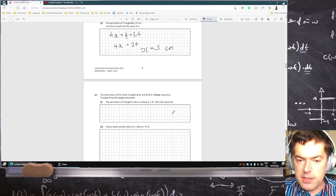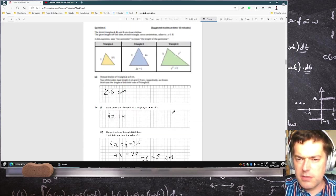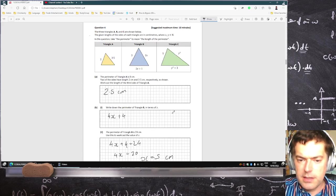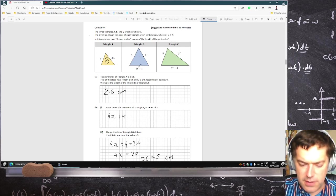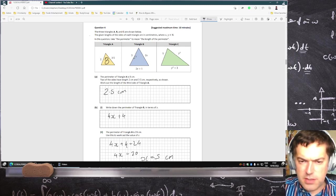And the perimeter of all three triangles form a linear sequence. Triangle C has the largest perimeter. The perimeter of C is K. Find the value of K. So in other words, what's the perimeter here? Right, well, the first one had a total perimeter of 8. The second one we'll have to work it out. 2 times 5 is 10 plus 1 is 11. 11 plus 10 plus 3. So that's 24.